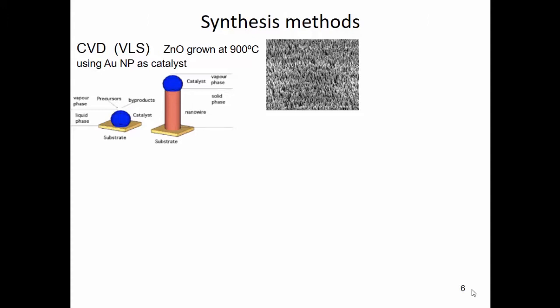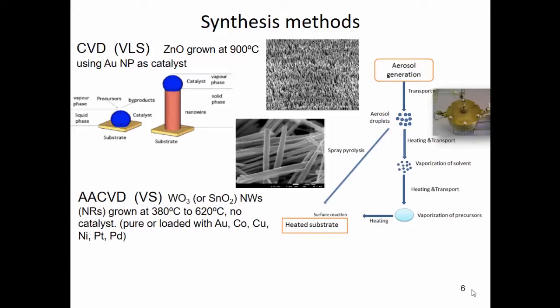We need to prepare the substrate with some gold nanoparticles, and then by CVD we achieve the growth of vertically aligned nanowires. If we use an aerosol-assisted CVD, this is a vapor-solid, self-catalyzed process — we don't need to prepare our substrate with catalytic particles. Using this method we have grown either tungsten trioxide nanowires or tin oxide nanorods.